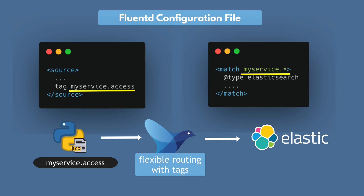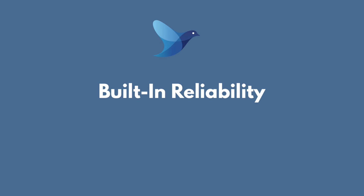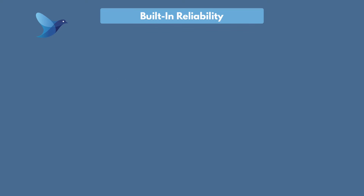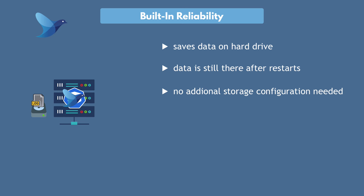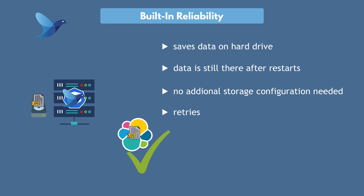That's basically how you can use Fluentd for your logs. One big advantage of Fluentd is its built-in reliability. When Fluentd collects and processes the data, it saves it on hard drive until it sends that processed data to the configured output destination. This means that if the Fluentd pod restarts in the middle of collecting or processing data, or the whole server restarts, the data will still be there and when Fluentd starts again it can pick up from where it left off. This also means you don't have to configure any additional storage for Fluentd, like a Redis database. If the backend output target is not accessible — for example, Elasticsearch is down or MongoDB isn't accessible — Fluentd will handle that by automatically retrying to send logs until that endpoint becomes available again.